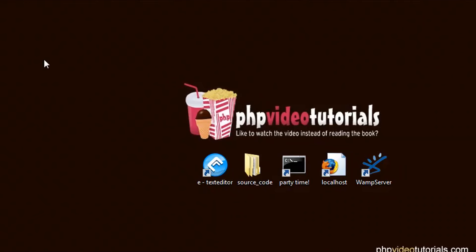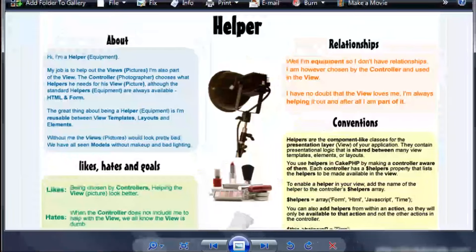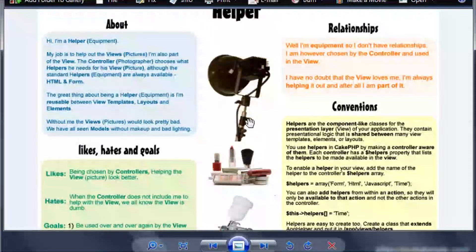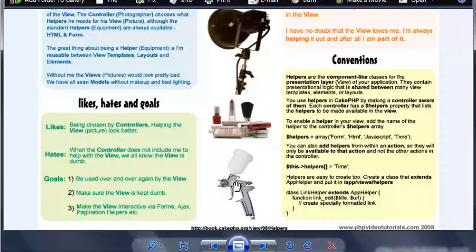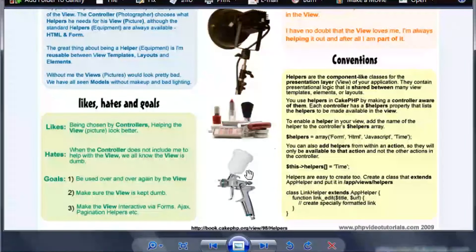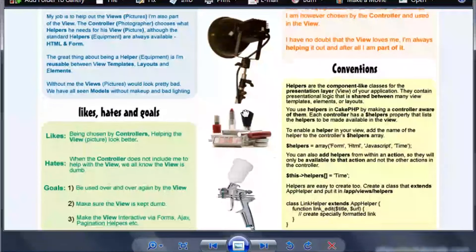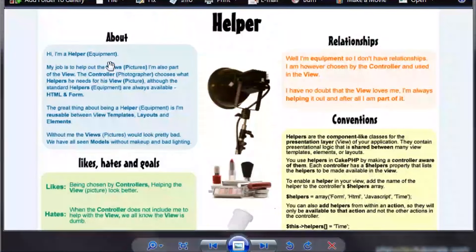Alright, so let's take a look at helpers, shall we? Open up the Windows Photo Gallery and we'll take a look. So you can see here that I see helpers as equipment - it's like your lighting, your makeup and your tanning gun, that's just an airbrush gun. It kind of helps out your views. You know what I mean? It's called helper. Helps your views.